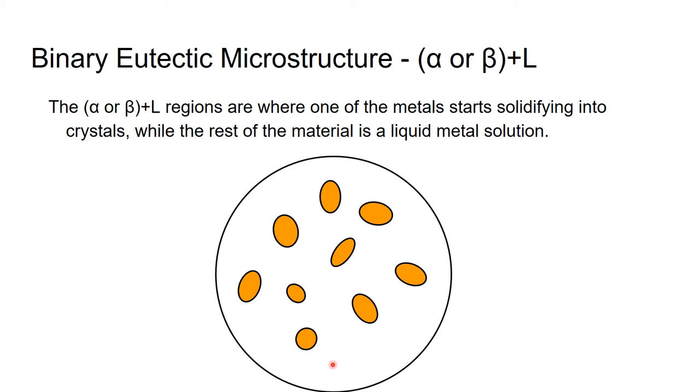For the solid and liquid phase mixture, crystals begin forming of either the alpha or the beta phase. In this diagram, you see a white area. That is the liquid phase of the material, and the ovals, which are shown in a yellow color, are either the alpha or the beta phase, depending on the weight percentage of tin in the particular phase diagram.